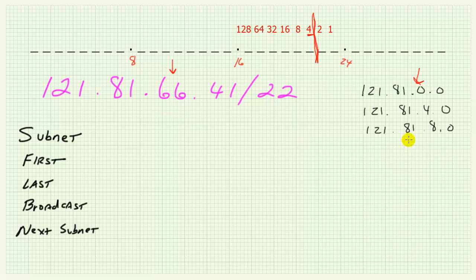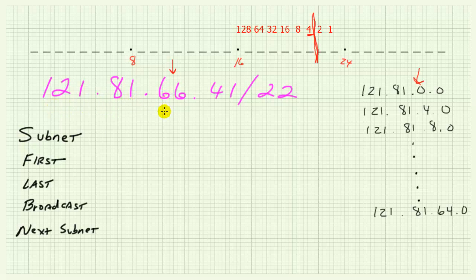The subnet interval is four. So what is the nearest even multiple of four to 66? We would have this continuing series all the way down to 121.81.64.0. So 121.81.64.0 slash 22 is the subnet that contains this IP address. Mathematically, we take the value in the interesting octet — 66 — and divide by the increment, which is four. 66 divided by four gives us 16.5. We discard the remainder (.5) and multiply 16 back by four, giving us 64. That's the third octet value for the current subnet.